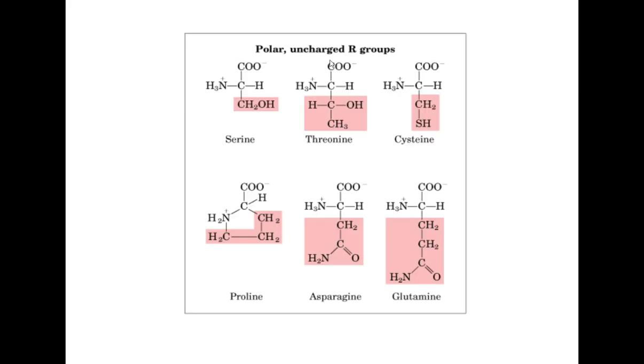Next we have the polar uncharged R-groups. A polar molecule is a molecule with an unequal distribution of electrons in the bonds between the atoms that form the molecule. So here between the electronegative oxygen and the carbon, the oxygen pulls a little bit more the electron. So they spend a little bit more time here and a little bit less time here. This grants this side of the molecule with a slightly negative charge and this side of the molecule with a slightly positive charge. However, the overall charge of the molecule remains the same.